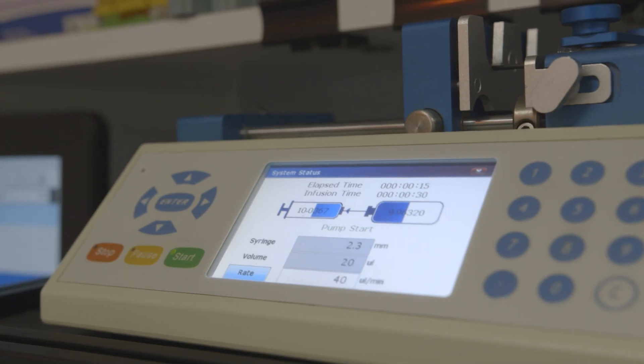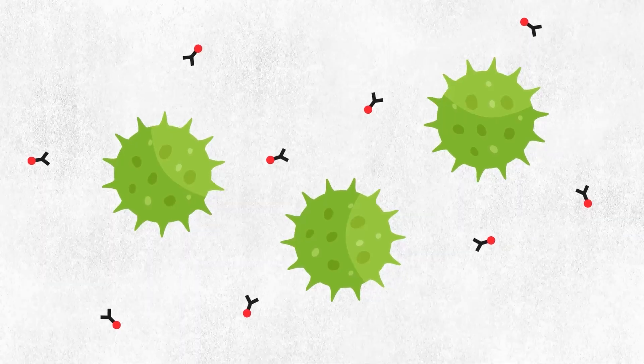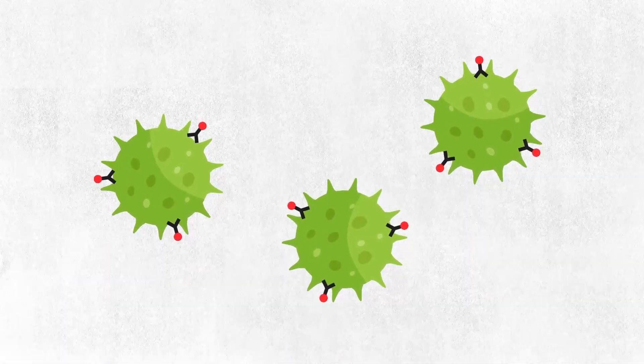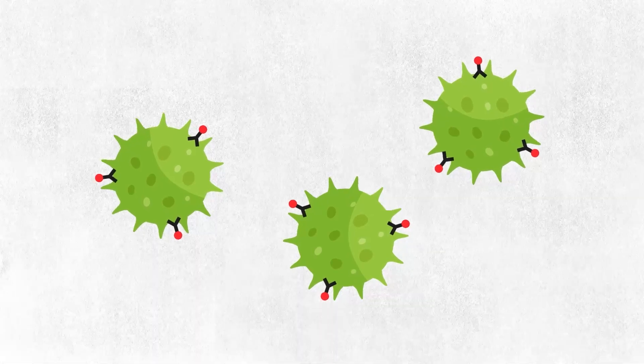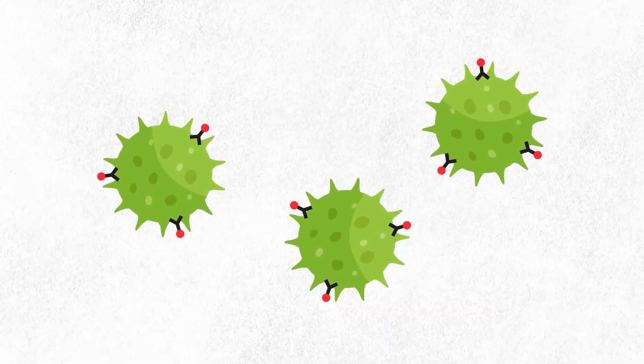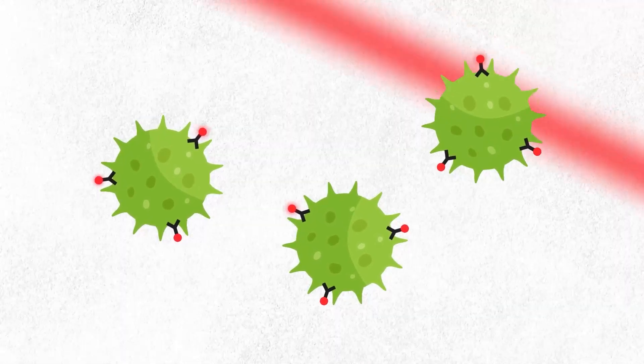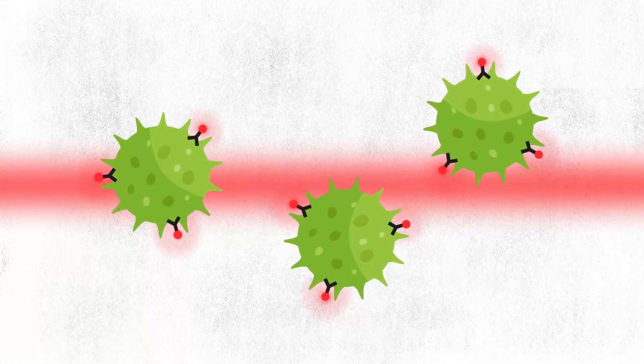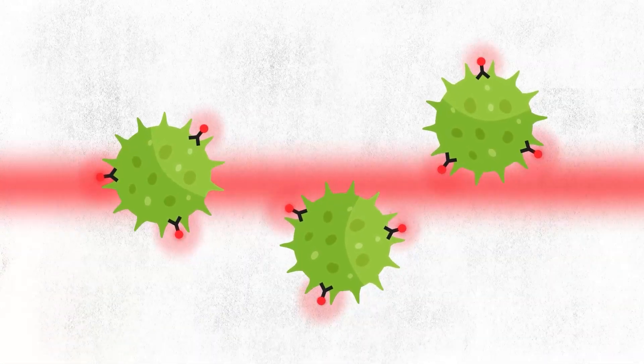The test works by fluorescently labeling viral particles in a sample. There is a fluorescent dye which is targeted to the proteins that are present on the surface of each viral particle. It then moves in front of a very sensitive detector which in the presence of light allows it to see each viral particle passing in front of a viewing window.